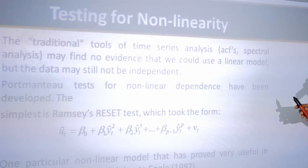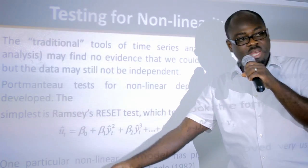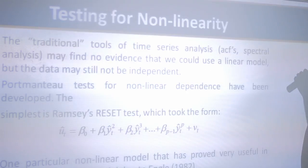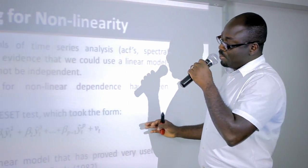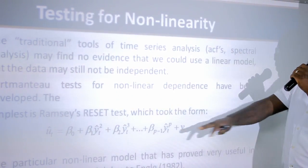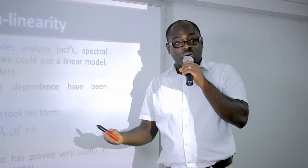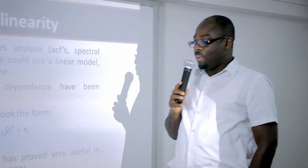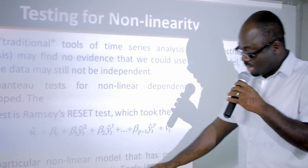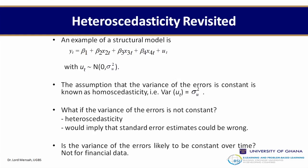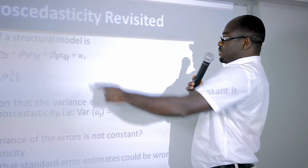If the joint values of B1, B2, B3 up to BP turn out to be different from zero, then there is non-linearity in your series. One particular non-linear model that has proved very useful in finance is the ARCH model, which came from Engle (1982). An example of a structural model has the dependent variable depending on about four variables with an error term mu_t, which is normally distributed with expected value zero and constant sigma_mu.